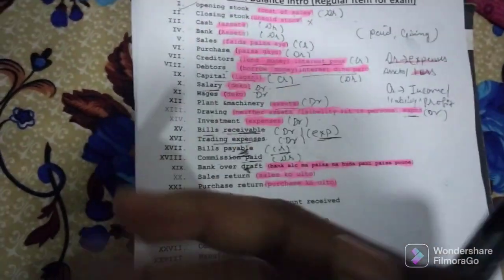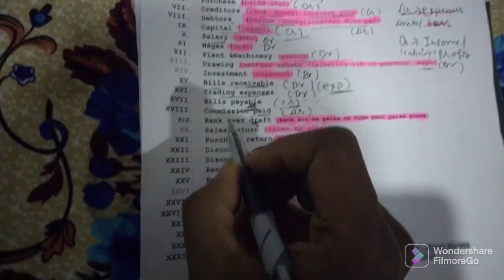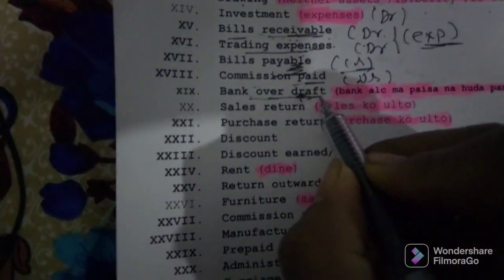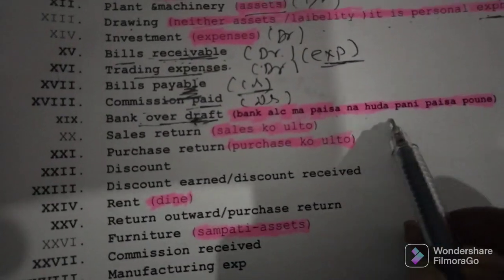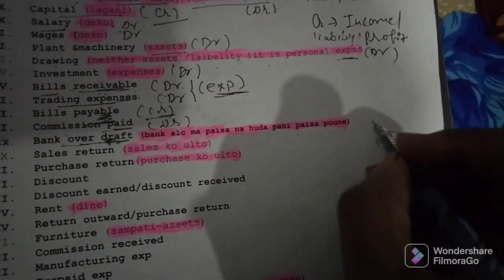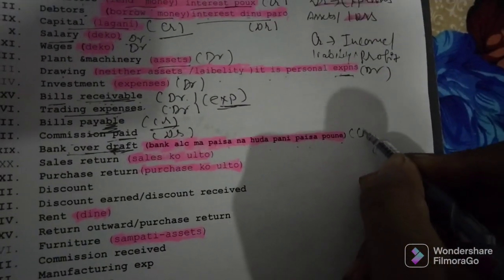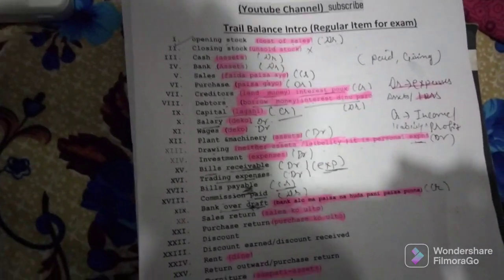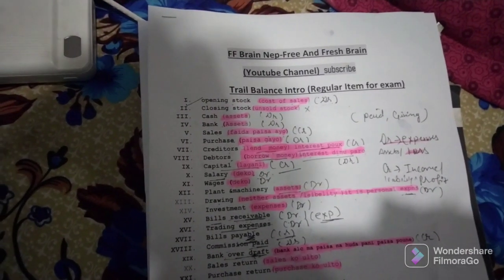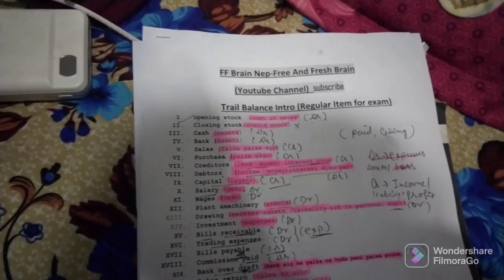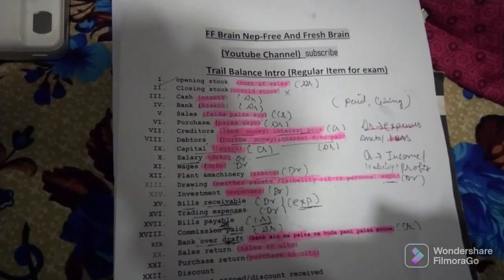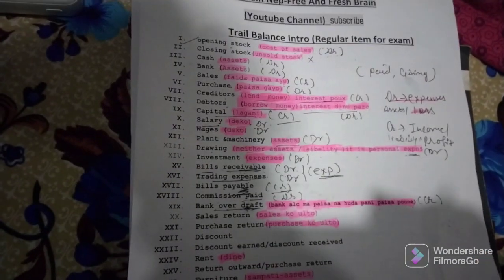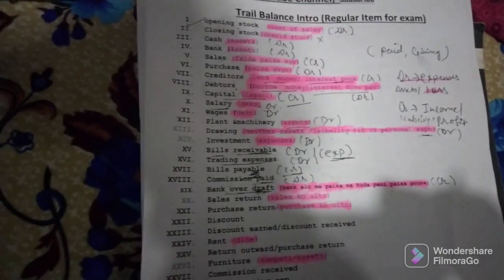Questions about receivable go to debit; payable go to credit. Now, bank overdraft — when your bank account goes below zero, your bank has a limit (e.g., 10 lakh or 20 lakh). Using beyond your account amount is called bank overdraft. Bank overdraft is a liability — it goes to credit. Sales return — this is also an important item.